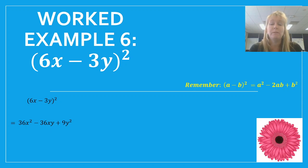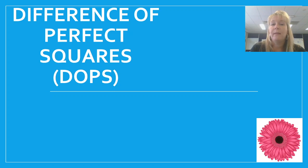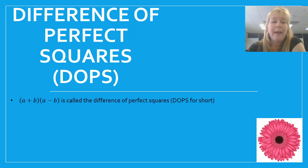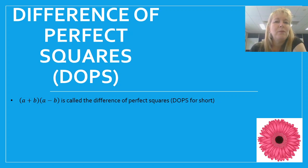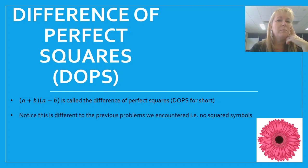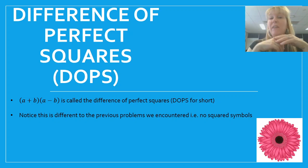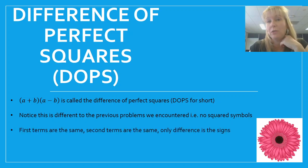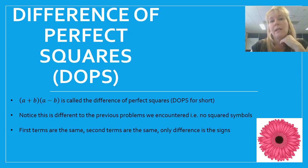Now it's time to look at the difference of perfect squares. This form — a plus b times a minus b — is called the difference of perfect squares, or DOPS for short. Once we do a couple of worked examples, you'll see why it's called that. You'll notice there are no squared symbols, so you might be wondering what's perfect or squared about it — that'll come to light. This is different to our previous problems where we had one set of brackets with a squared symbol. Here we've got two sets of brackets, and it looks very much like multiplying binomials. The first two terms are the same in each bracket, the second two terms are the same — the only difference is the signs: one set has plus, the other has minus.